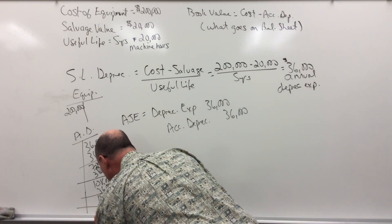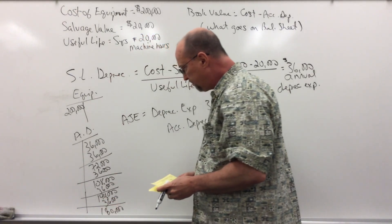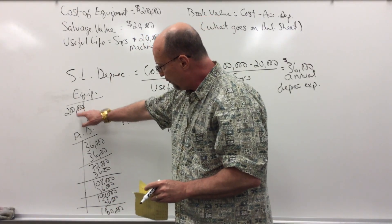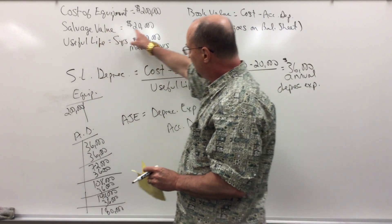Notice my accumulated is $180,000. My book value, $200,000 minus $180,000, is $20,000, which is also my salvage value.